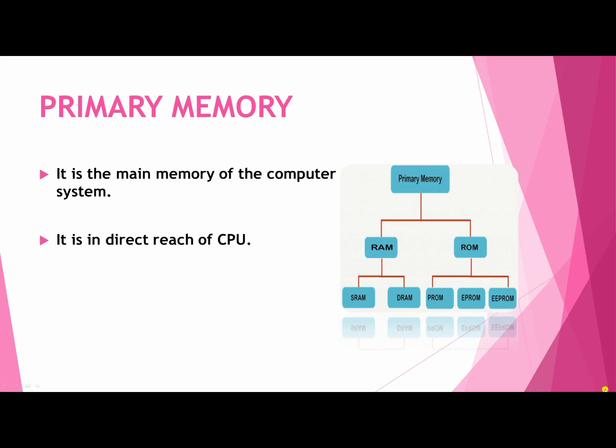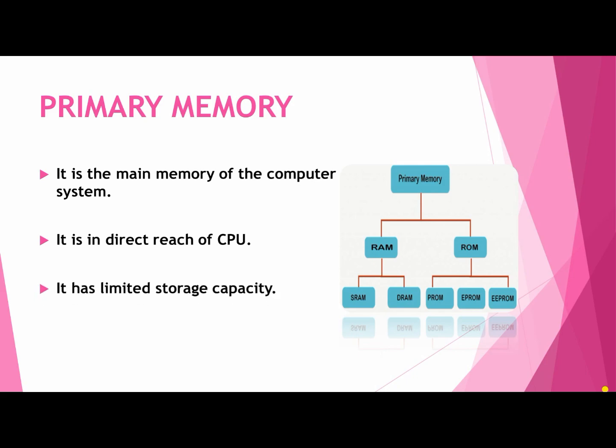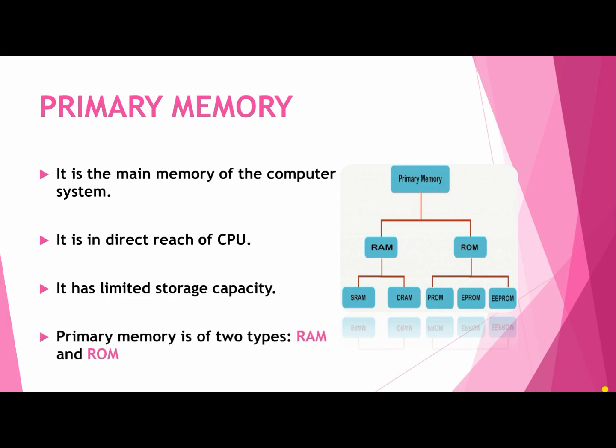Primary memory is in direct reach of the CPU. It has limited storage capacity. Primary memory is of two types: RAM and ROM.